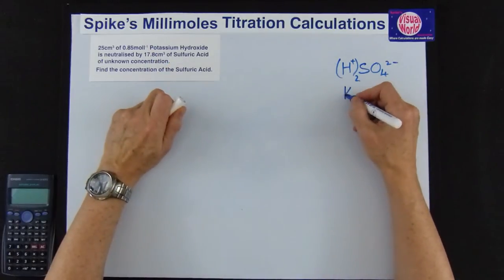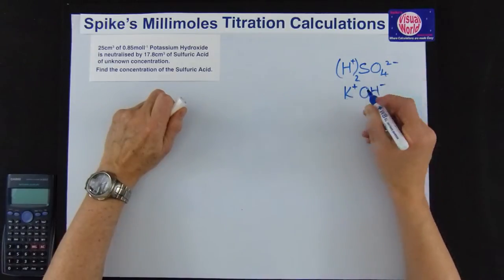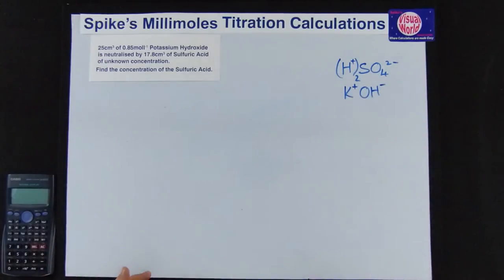Potassium hydroxide, potassium ion, hydroxide ion and they are balanced so there's only one hydroxide.